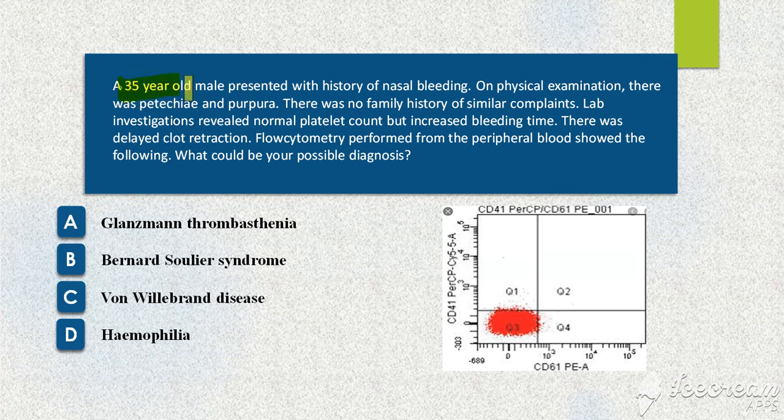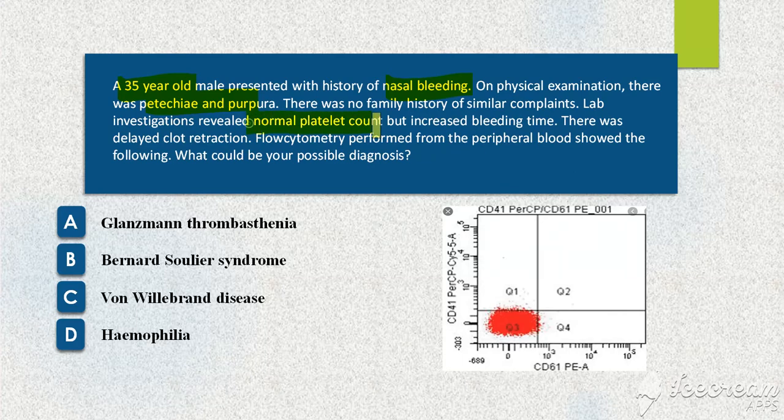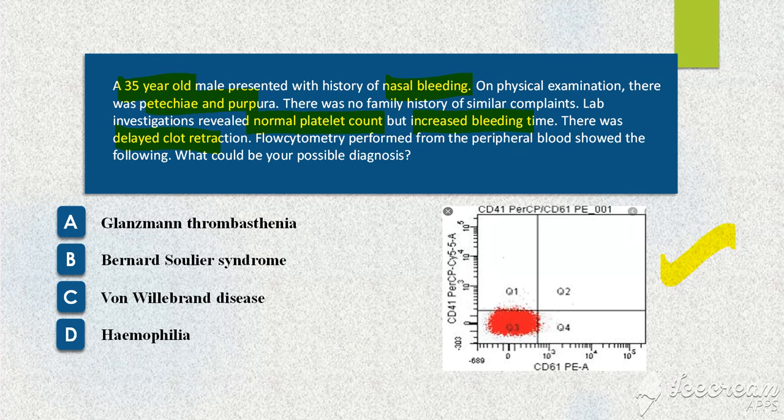The question for today is a 35-year-old male presented with history of nasal bleeding. There was petechiae and purpura. There was no family history of similar complaints. Lab investigations revealed normal platelet count and increased bleeding time. There was delayed clot retraction. Flow cytometry showed the following. What could be the diagnosis? Glanzmann thrombasthenia, Bernard-Soulier syndrome, von Willebrand disease, or hemophilia?